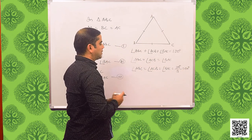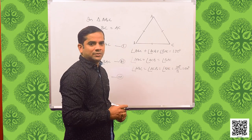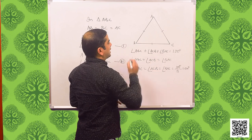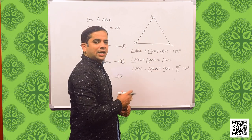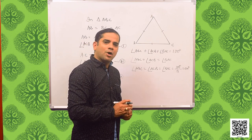We have found that each angle of this equilateral triangle is 60 degrees. So in an equilateral triangle, each angle is 60 degrees. Hope you have understood. In our next class we will discuss some more concepts about triangles. Till then, practice all the questions, revise the concepts. Keep smiling, take care, thank you.